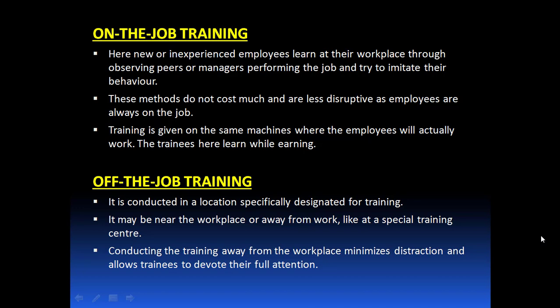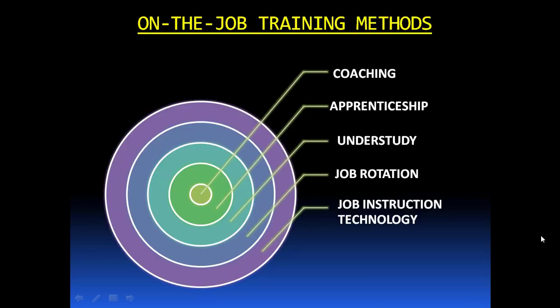In off-the-job training, a specific location is designated where training is imparted to the employee. This place can be near the workplace or away from it — that depends on management. Conducting training away from the workplace minimizes distraction and allows trainees to devote their full attention to the training program. The different methods of on-the-job training are: coaching, apprenticeship, understudy, job rotation, and job instruction technology.